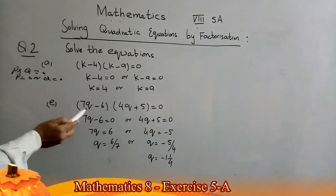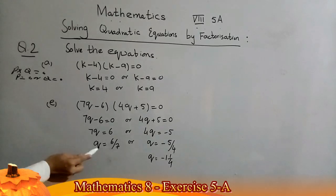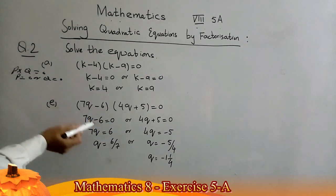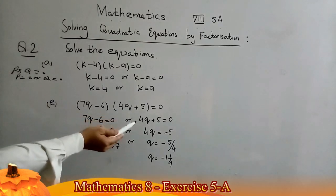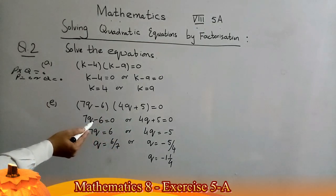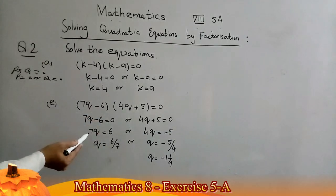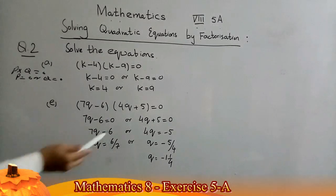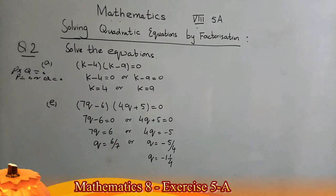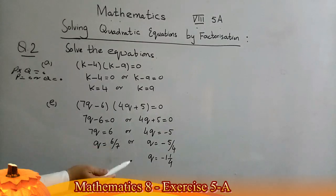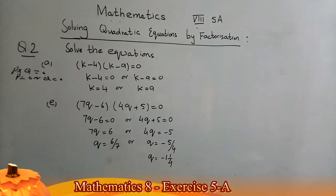Question 2, Part (e): find the value of q. The equation is (7q − 6)(4q + 5) = 0. Either 7q − 6 = 0 or 4q + 5 = 0. From the first, 7q = 6, so q = 6/7. From the second, 4q = −5, so q = −5/4, which can also be written as −1 and 1/4. The remaining parts of Question 2 will be your homework.